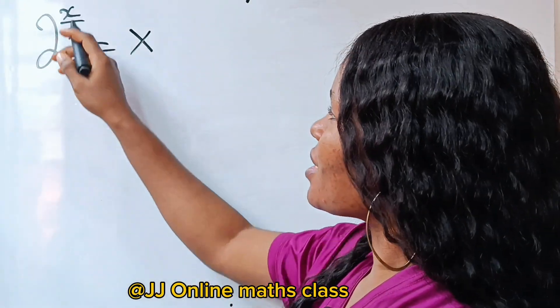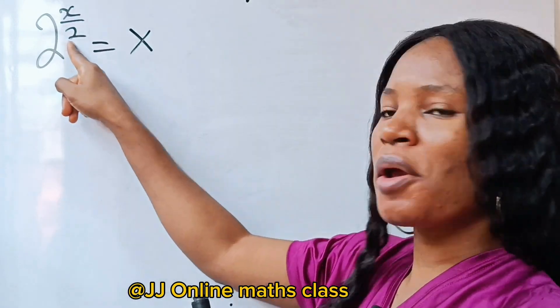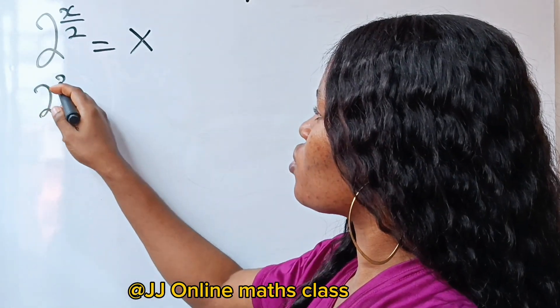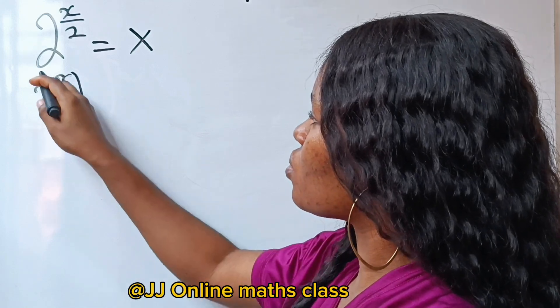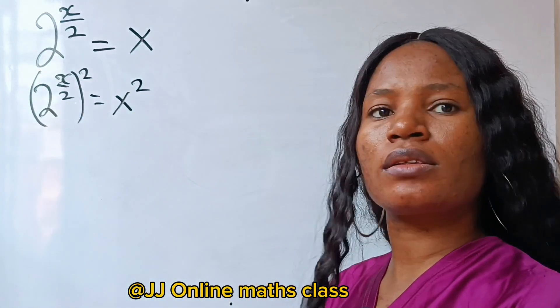The first thing we need to do is let's square both sides of this equation to be able to remove these two. So if we do that, we are going to have 2 to the power of x over 2 squared is equal to x squared.